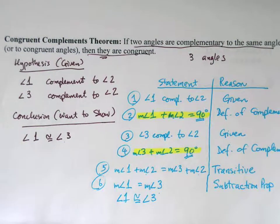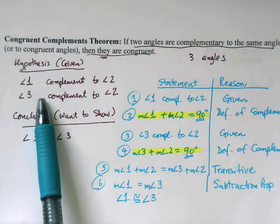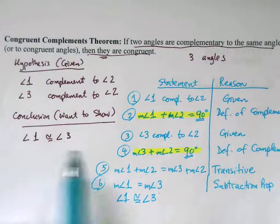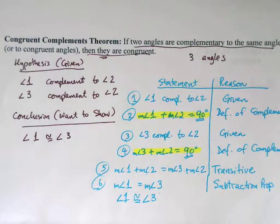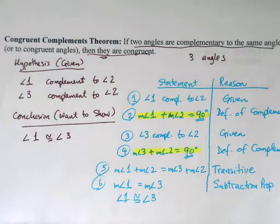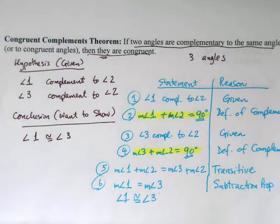In a two-column proof, we start with the given from the hypothesis and work through, listing correct reasons to reach the conclusion. This proof is elegant because it's independent of specific values — we don't know the exact measures of angle one or angle two, just that they add up to 90 degrees. Thank you for watching, and continue to the rest of the videos for this lesson.